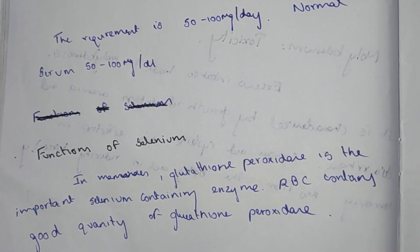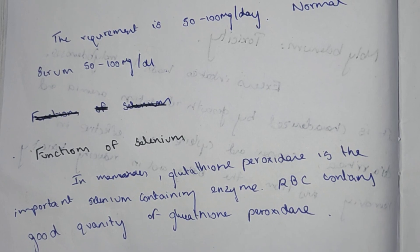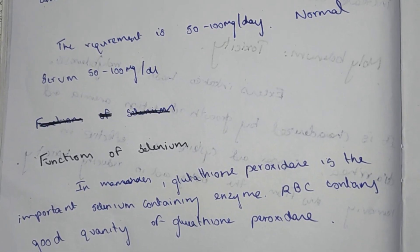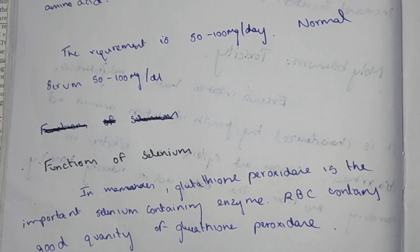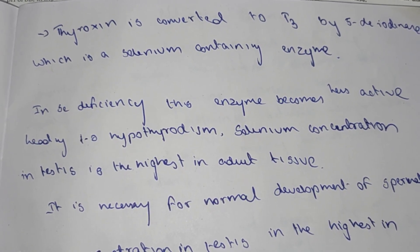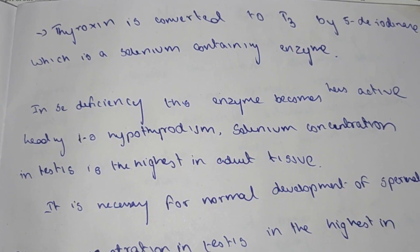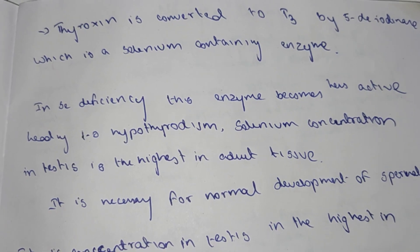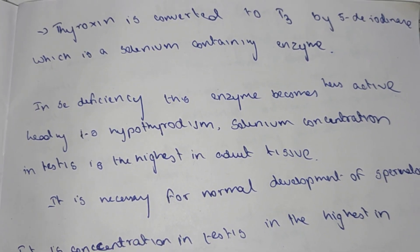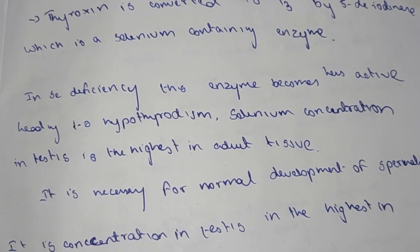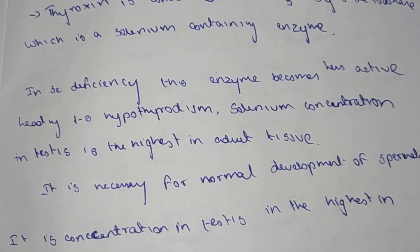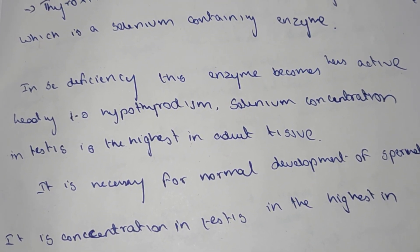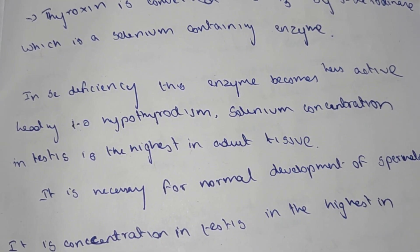Red blood cells have the highest amount of glutathione peroxidase. Selenium also plays a role in converting thyroxine into 3,3',5'-triiodothyronine (T3) via a selenium-containing enzyme. Deficiency of selenium may therefore lead to hypothyroidism.